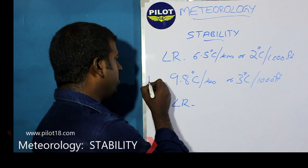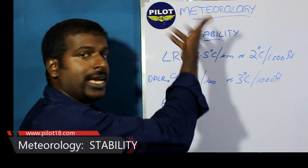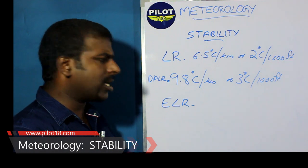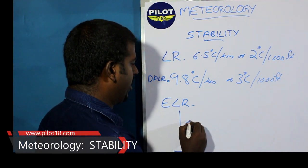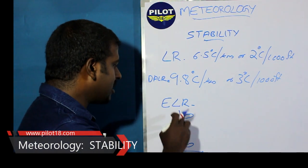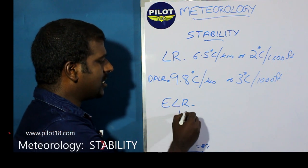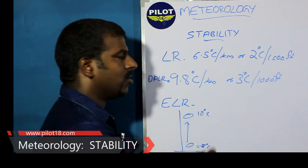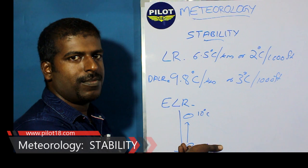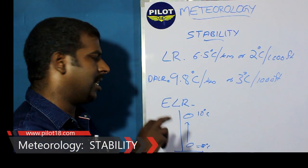ELR can be greater than DALR, which is 9.8 degrees Celsius per kilometer. It can also be very much lower than 6.5 degrees Celsius. It can be isothermal — meaning a parcel of air is lifted and the temperature has no change. Something else can also happen: if it is 5 degrees Celsius near the ground and 10 degrees Celsius one kilometer above, that is called inversion — lapse rate is there, but in an inverted form.